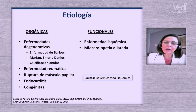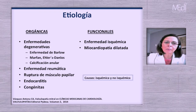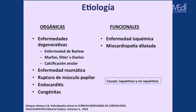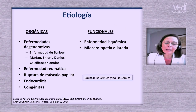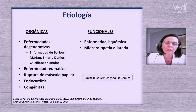Causas y mecanismos no tienen el mismo significado; una misma causa puede producir insuficiencia a través de diferentes mecanismos. Dentro de la etiología se dividen en dos grandes grupos: las orgánicas, con lesiones propias de la válvula, y las funcionales, consecuencia de alteraciones de la función miocárdica. Entre las orgánicas, las más frecuentes son la enfermedad degenerativa —incluyendo la enfermedad de Barlow, Marfan o Ehlers-Danlos— y la calcificación anular. En nuestros países la enfermedad reumática sigue siendo frecuente aunque las degenerativas la están alcanzando. La ruptura de músculo papilar por isquemia, endocarditis y patología congénita también se incluyen. Las funcionales son resultado de alteraciones del ventrículo izquierdo, secundarias a cardiopatía isquémica o miocardiopatía dilatada.